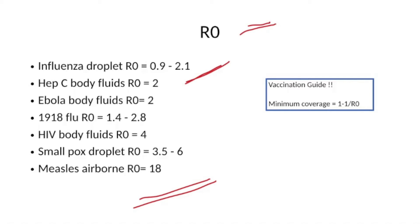How can this help us in public health? It helps in vaccination guidance — it gives the minimum coverage required to achieve herd immunity and prevent the spread or occurrence of an epidemic. Mathematically, the required coverage is calculated as 1 minus 1 divided by R0.